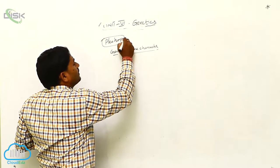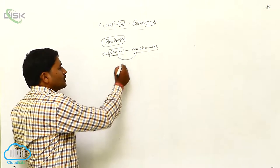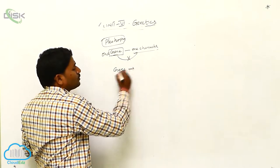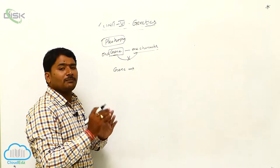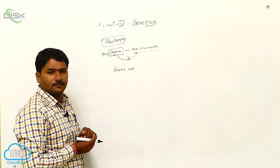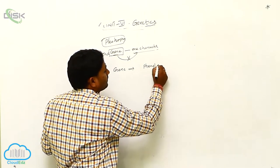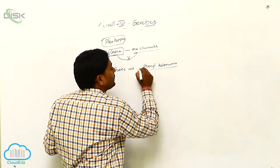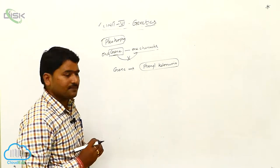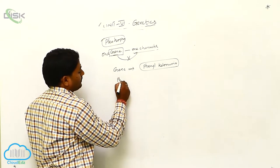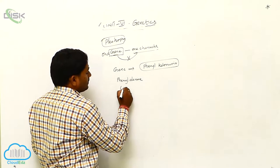As per Mendel, one gene controls only one character, but this is not always true. One gene may control more than one character. This is called multiple effects of a single gene on more number of characters, called pleiotropy. An example of pleiotropy is phenylketonuria, which is a disease.